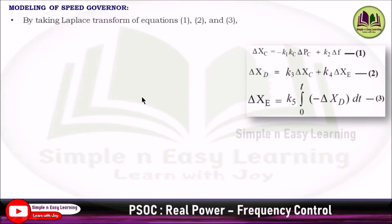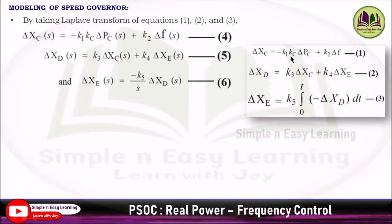Now consider all three equations — Equation 1 (del_Xc), Equation 2 (del_Xd), and Equation 3 (del_Xe) — and take the Laplace transform of each. The first equation becomes del_Xc(s) = −K1·Kc·del_Pc(s) + K2·del_f(s) (Equation 4). The integration in Equation 3 introduces 1/s × del_Xd. These give Equations 4, 5, and 6.